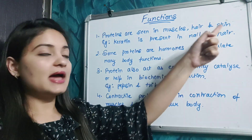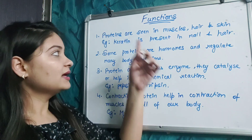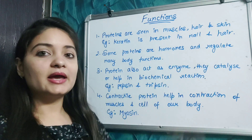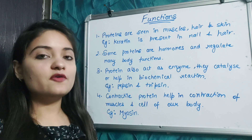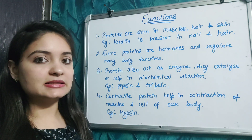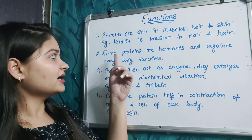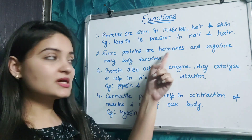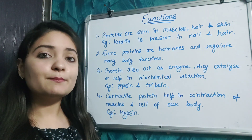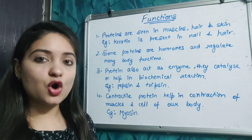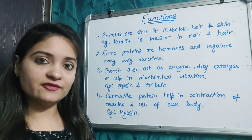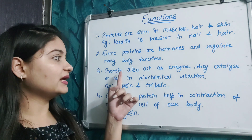Proteins are found in muscles, hair, and skin. For example, keratin is present in the nails and hair — keratin is a type of protein easily found in our hair and nails. Some proteins are hormones and they regulate body functions.